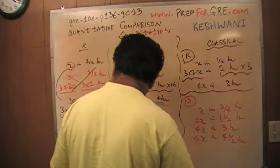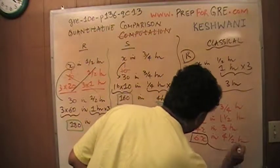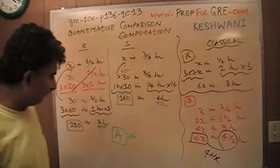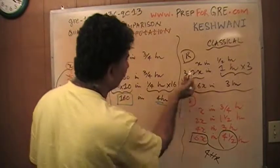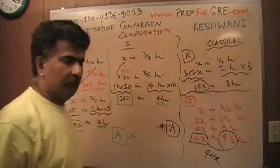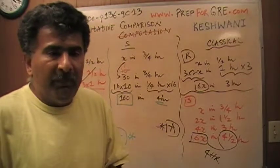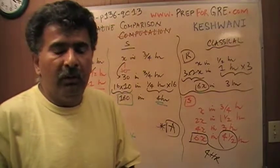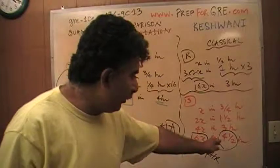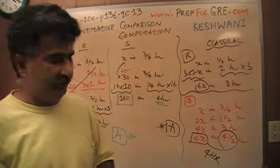But machine S only has four hours, not four and a half. Machine S does 6X in four and a half hours, but it only has four hours — so in four hours it will do fewer than 6X. Machine R does 6X in three hours, and machine S does fewer than 6X in four hours. Therefore the answer is A. I'm asking how long it takes S to do 6X: four and a half hours — but it only has four, so it does fewer than 6X.